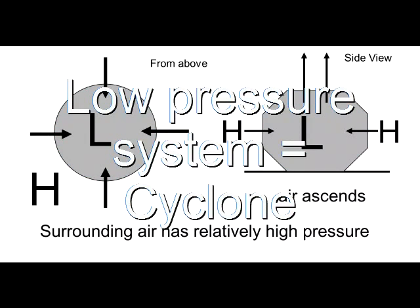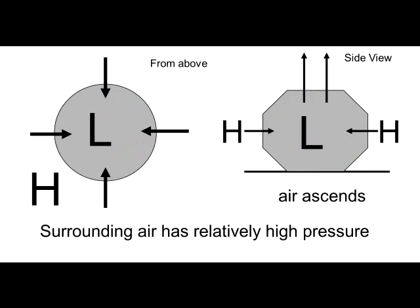A cyclone is a low pressure system. The surrounding air of a cyclone has relatively high pressure. Cyclones are characterized by ascending air and convergence. Ascending means rising. Ascending air cools and leads to the formation of clouds and possibly precipitation. Convergence refers to the fact that air is coming together in the low pressure center. So we are talking about a net horizontal inflow of air.